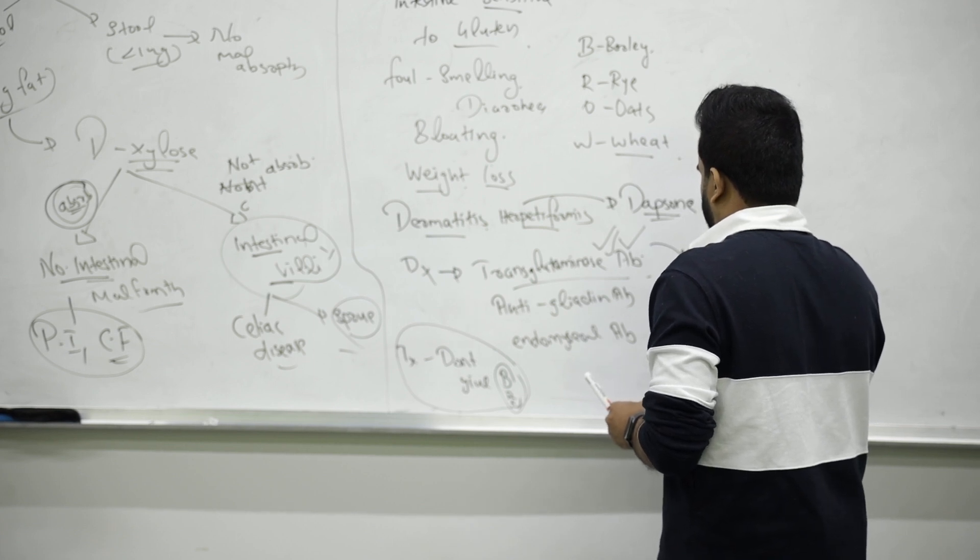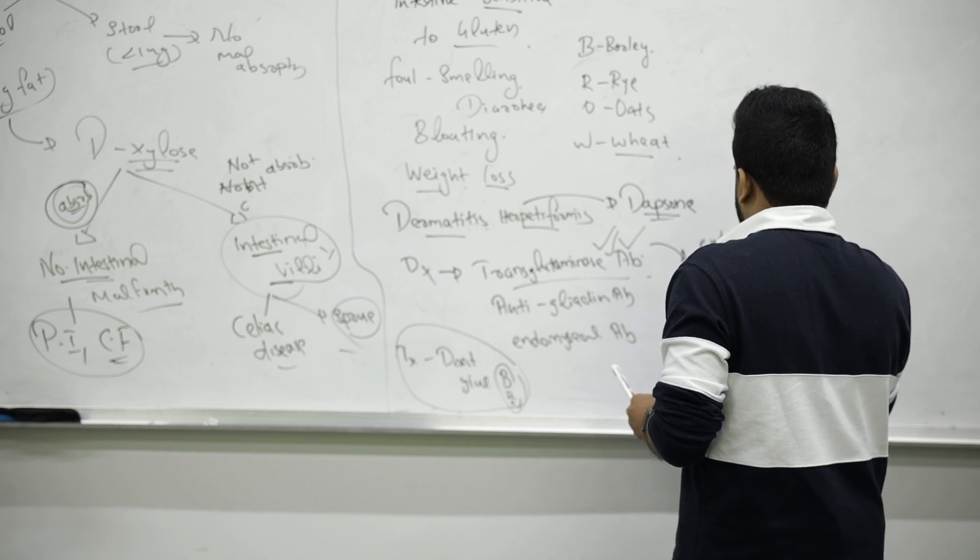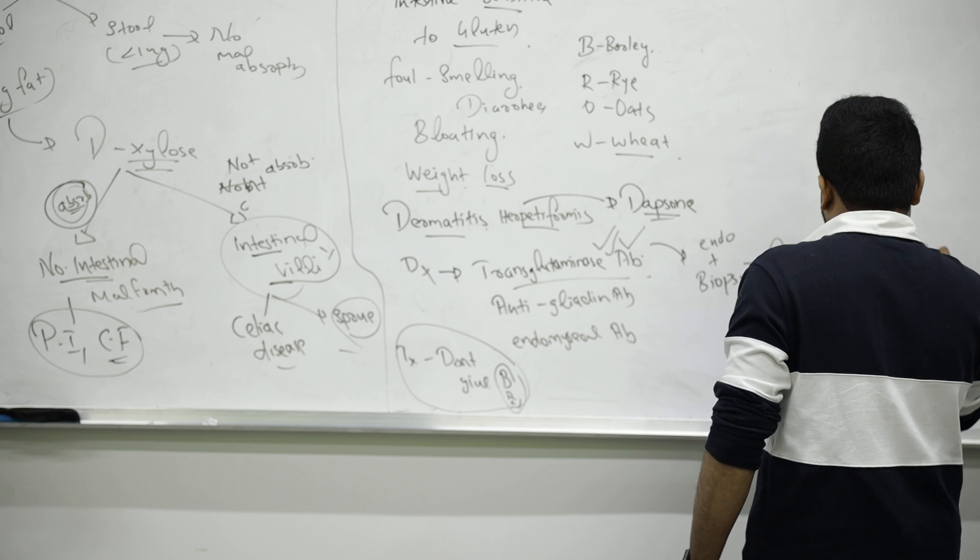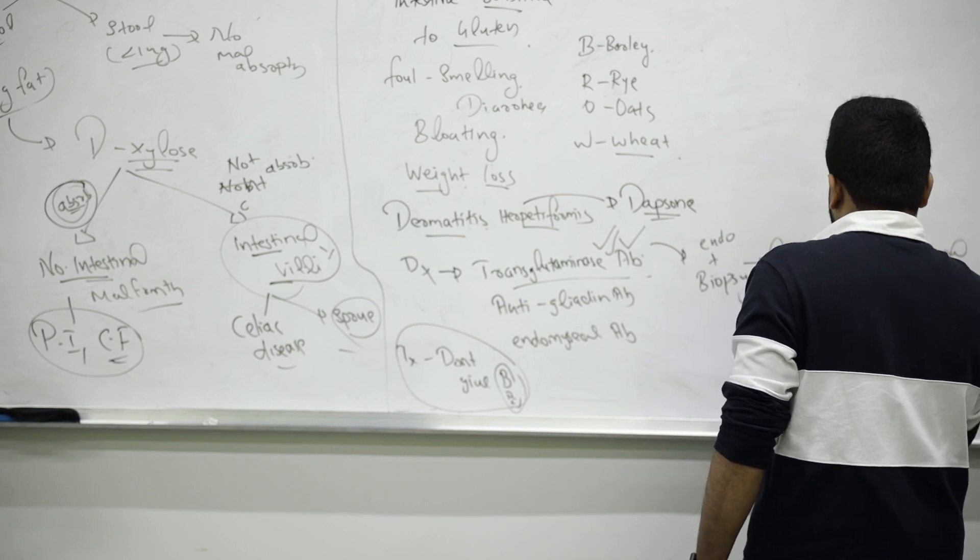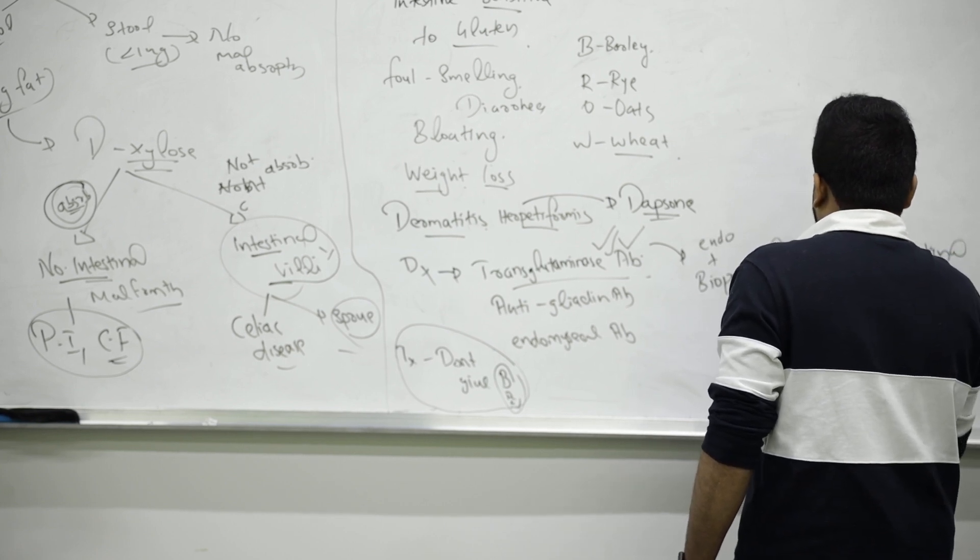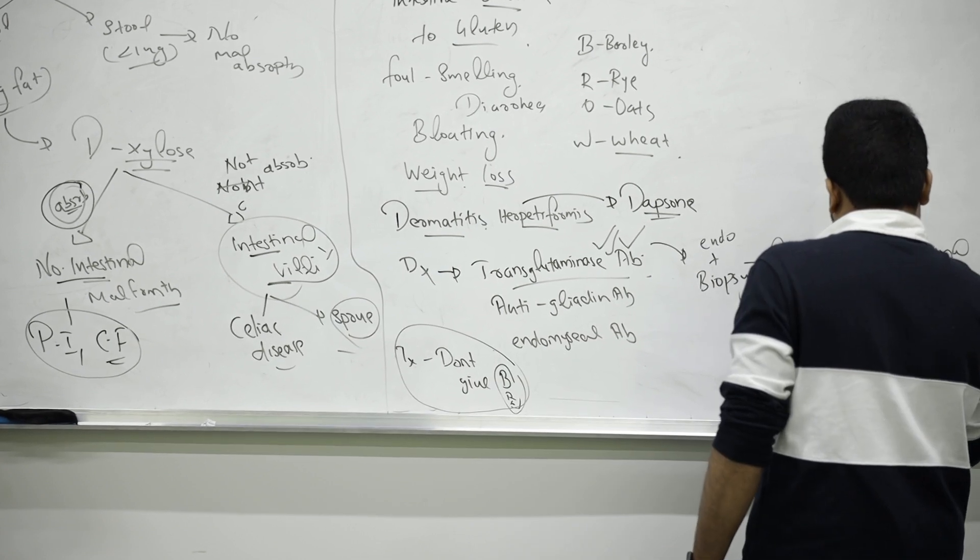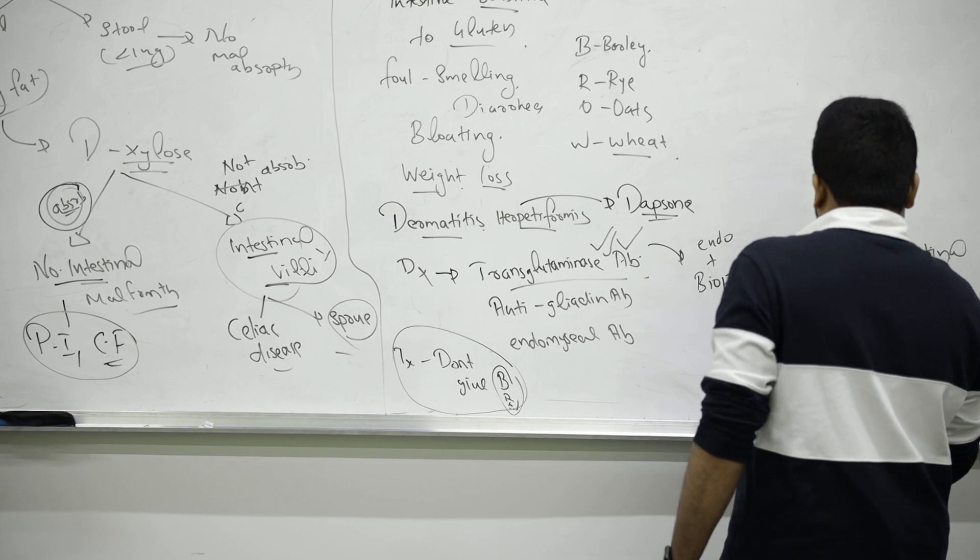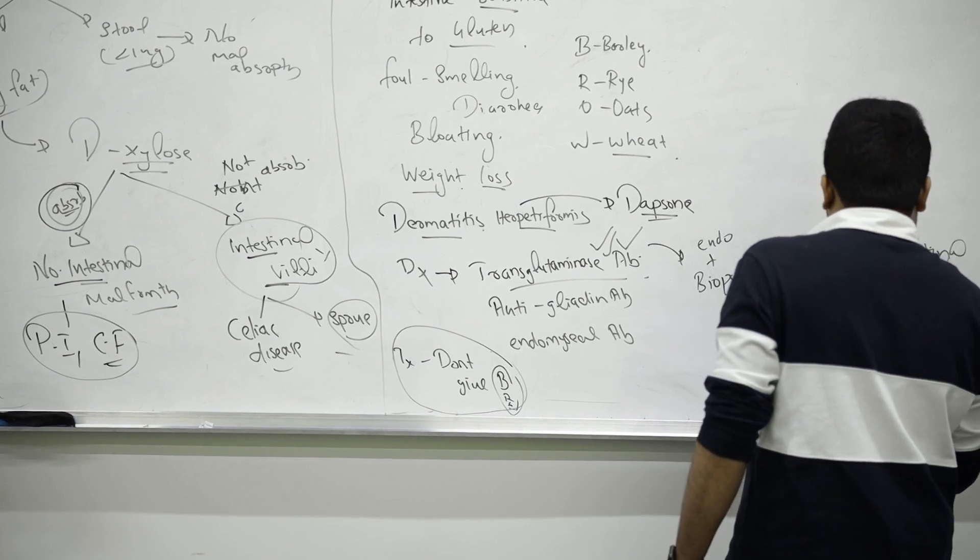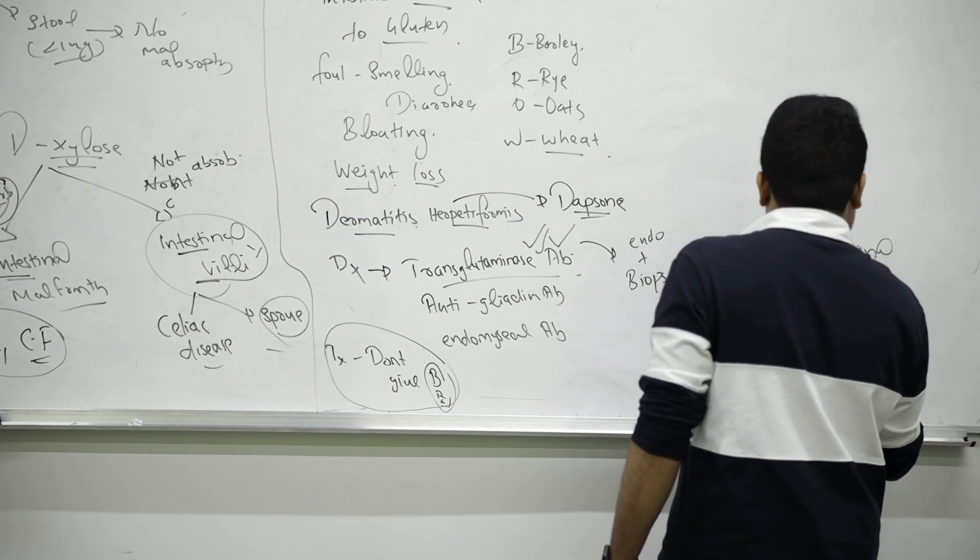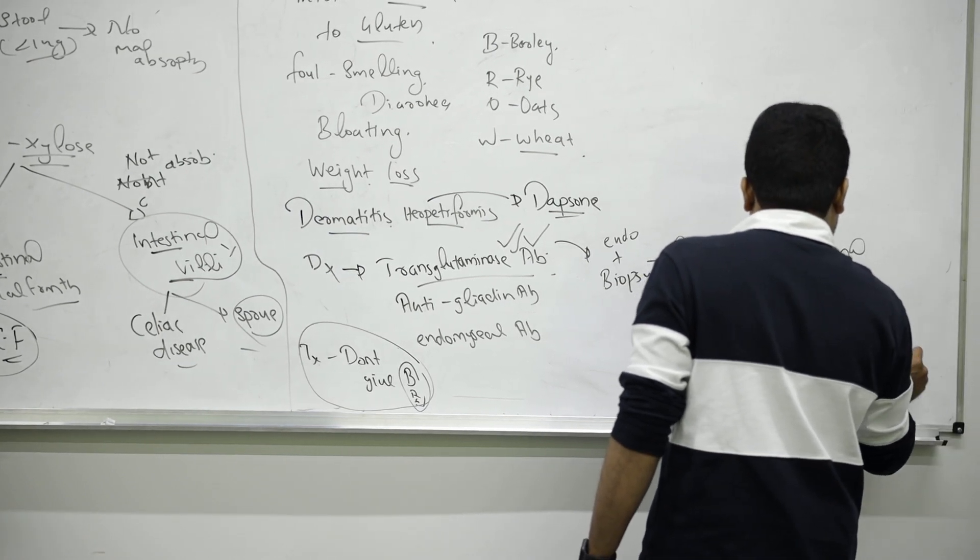That will show you atrophy of intestinal villi, very important, or they will show you crypt lengthening, crypts lengthened, then blunt or atrophied villi, then the mucosal crypts will be atrophied.